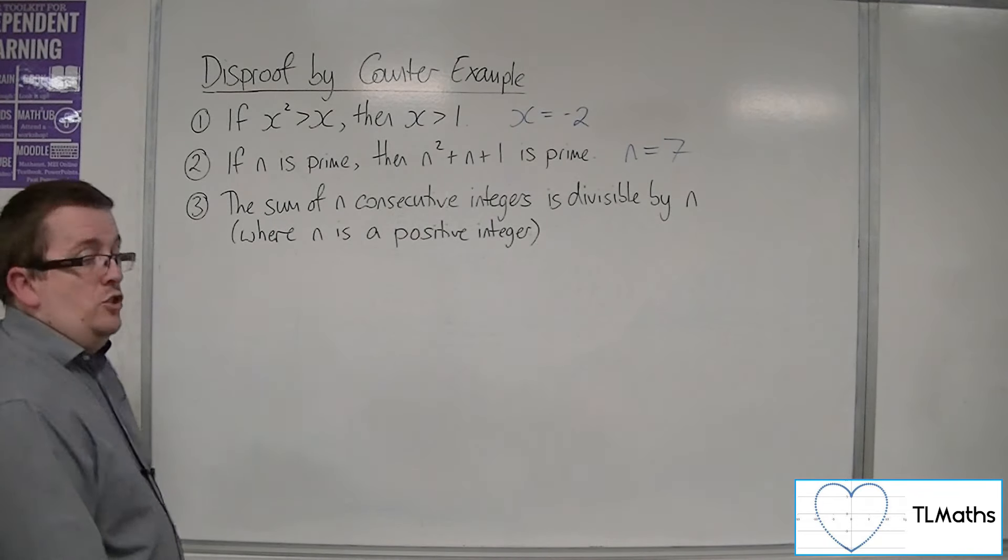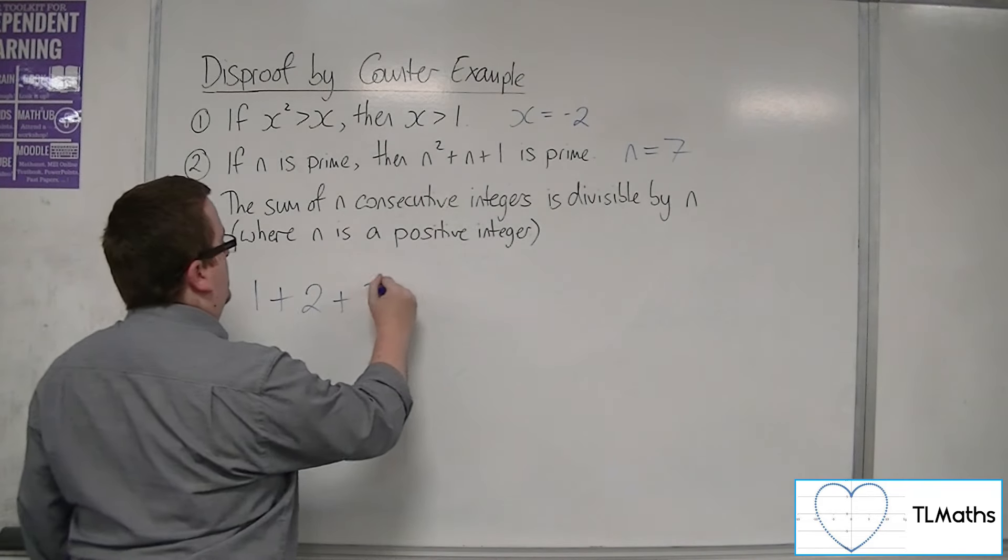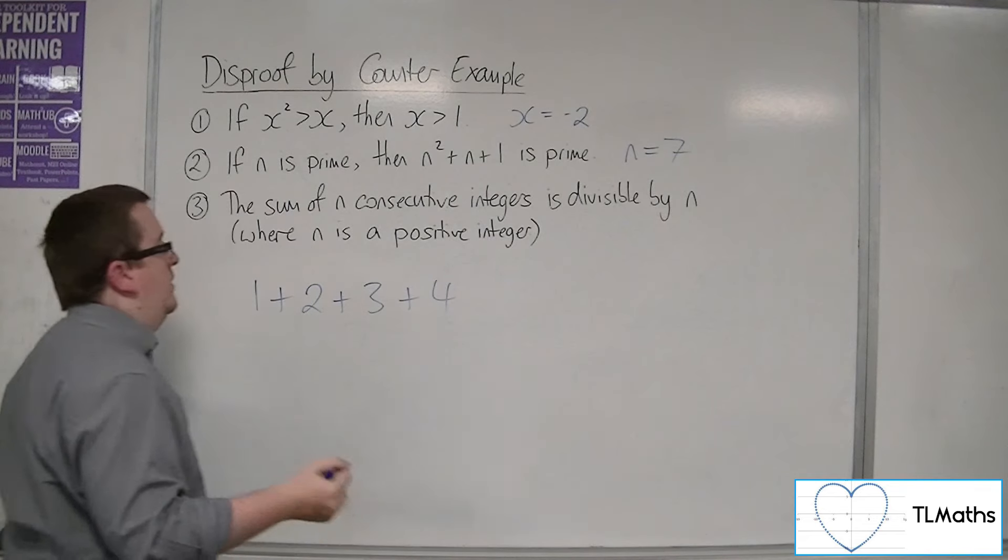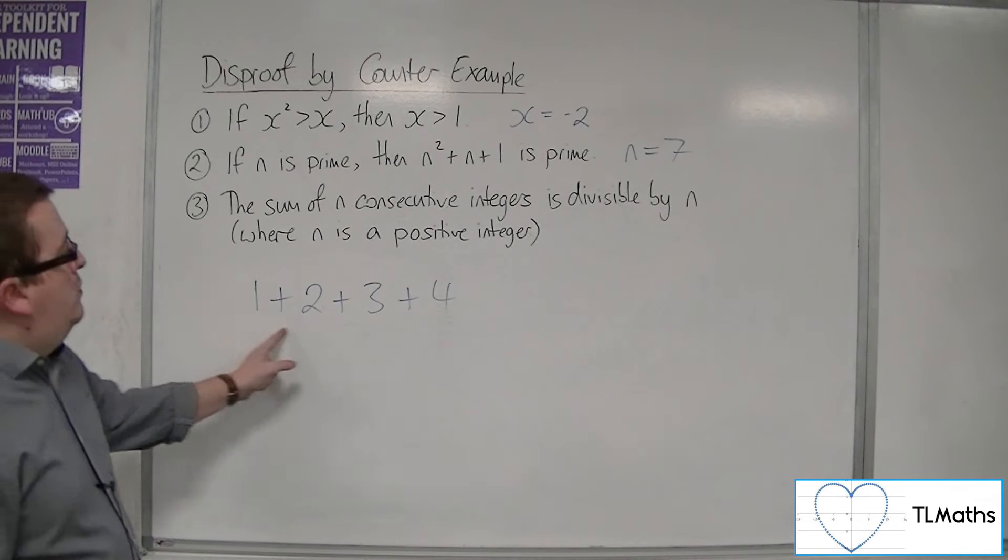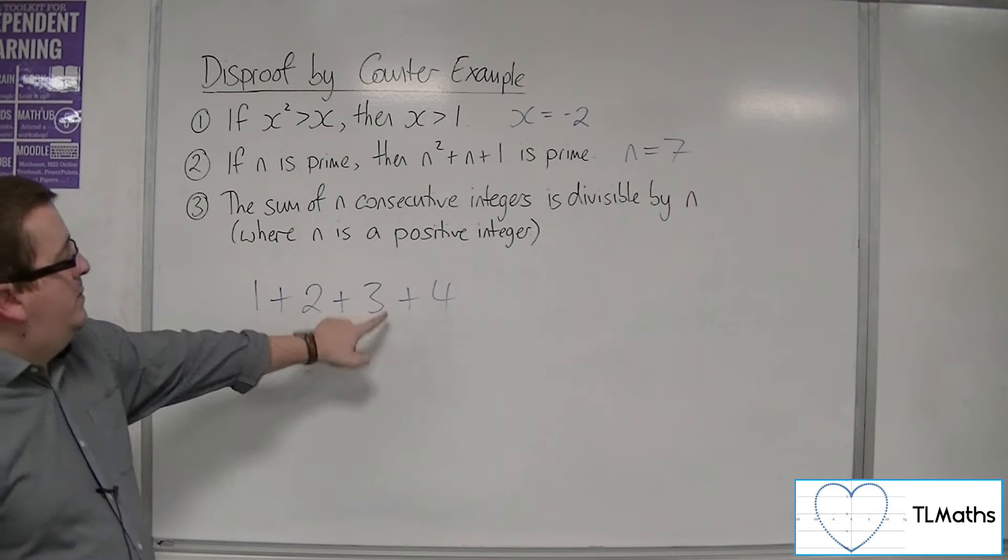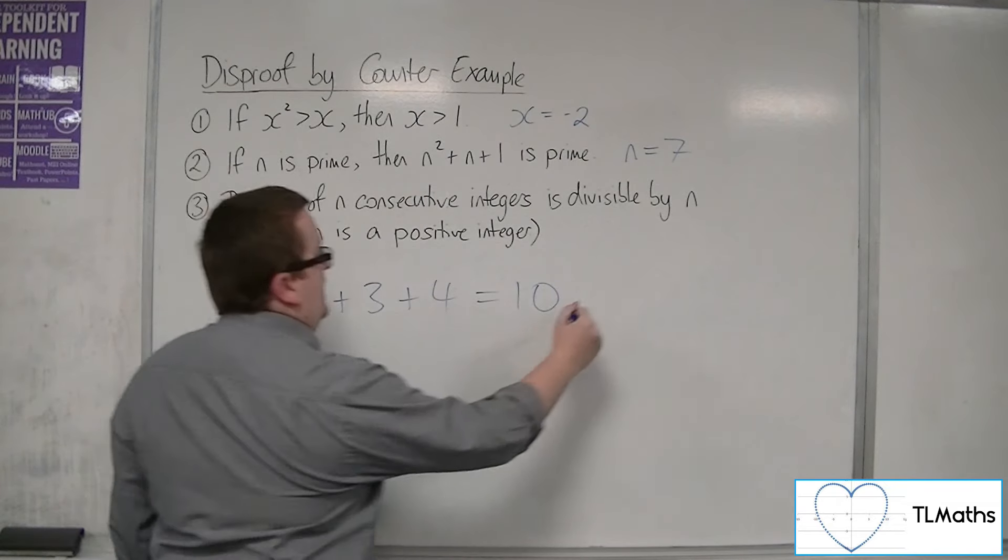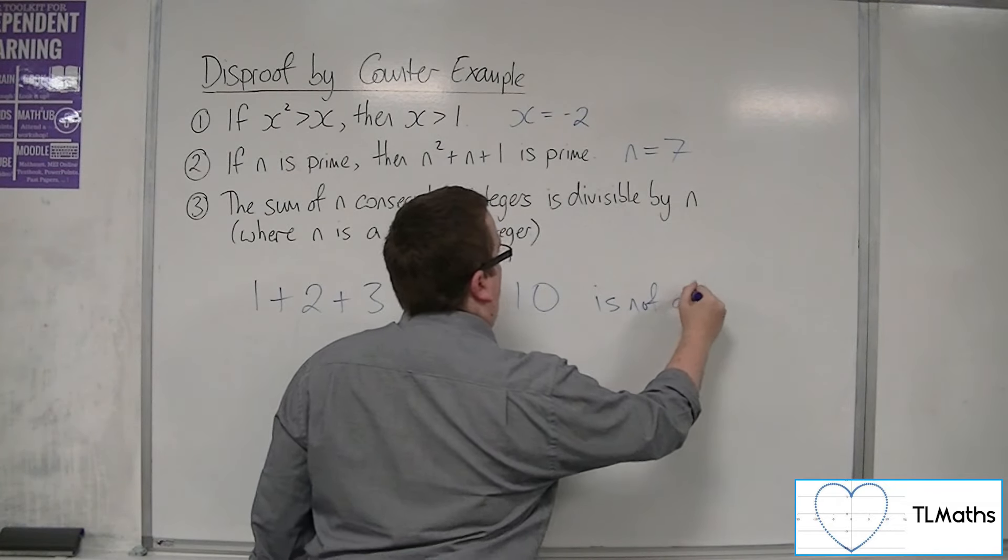So let's try that, shall we? Shall we try 1 plus 2 plus 3 plus 4? So here are 4 consecutive integers. 1 plus 2 is 3, plus 3 is 6, plus 4 is 10. But 10 is not divisible by 4.